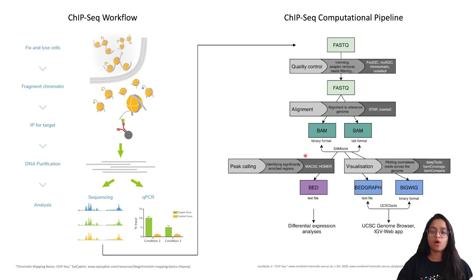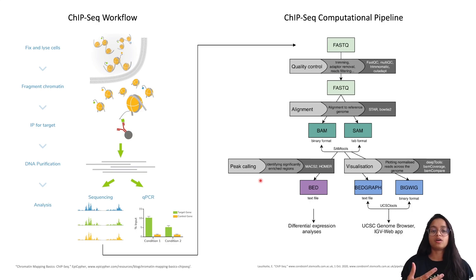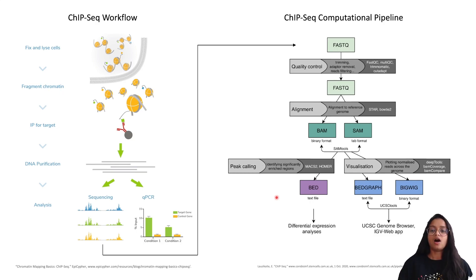Once reads are aligned, peak calling is performed to identify genomic regions significantly enriched with the protein of interest — essentially finding where the protein binds in the DNA or where histone modifications occur. Peak calling outputs regions significantly enriched compared to the background. It is crucial to compare the enrichment in a sample with an input control, which is a sample that has been cross-linked and fragmented but not immunoprecipitated. We will discuss controls in upcoming slides.